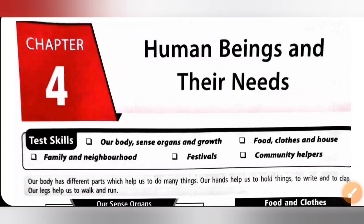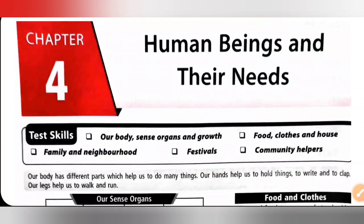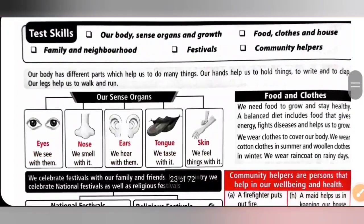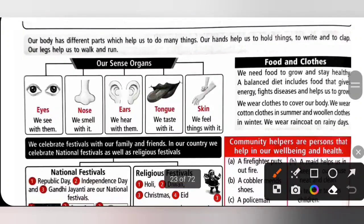Hi my dear kids, in this video we are going to see chapter 4, Human Beings and Their Needs from MTG Workbook of Class 1 NSO. So introduction part, our body has different parts which help us to do many things. Our hands help us to hold things, to write and to clap.